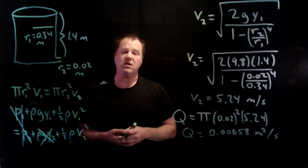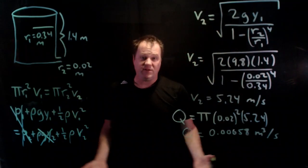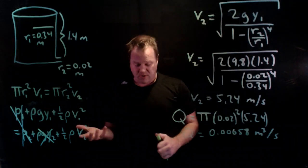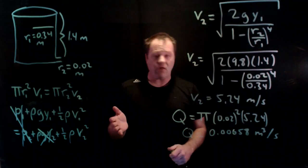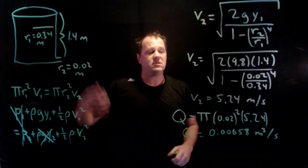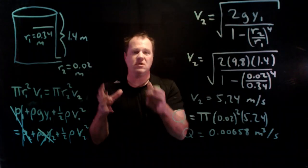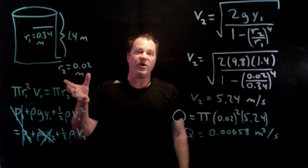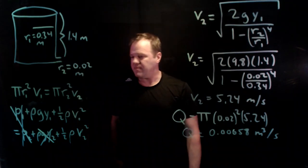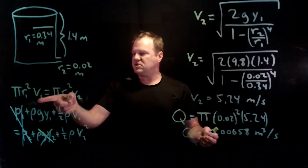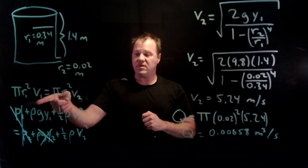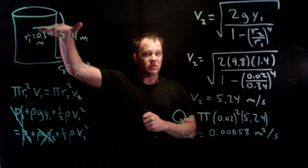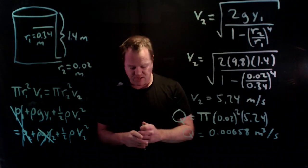That doesn't sound like a lot, but a cubic meter is a lot of fluid. If we convert that to gallons per second, it's 1.8 gallons per second, so quite a bit of fluid is coming out here. Every second we get almost two milk jugs full of water coming out. It's coming out pretty good. If we wanted, we could certainly solve for v1 in this equation. That would tell us how quickly the water level is going down, but that's for another day.